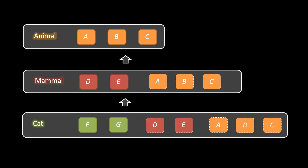The most obvious use for inheritance is when modeling real-world objects, as with animal, mammal, and cat. In the real world a cat is a kind of mammal and a mammal is a kind of animal, so it makes sense to put those classes in an inheritance hierarchy. If a cat truly is a type of mammal — just a more specific kind — it will need all the same features of the mammal class plus features specific to cats. For example, all mammals eat and sleep, so the mammal class might have eat and sleep methods, while a meow method would go in cat because not all mammals meow.